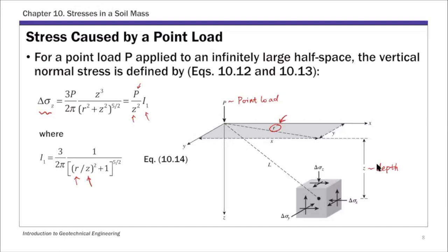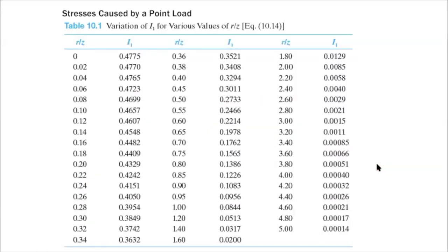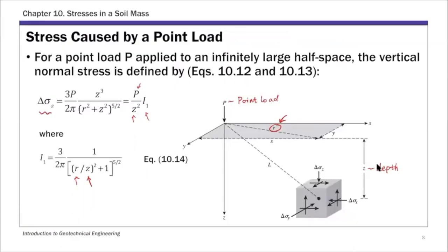Most of the time in this chapter, when we solve stress distribution problems, we're going to use a tabular form of the solution. I1 is a function of position R and Z. In the table, you'll see R over Z values and the corresponding I1 values. If your R over Z value falls in between listed values, you can use simple interpolation. Once you get I1, you can calculate Delta Sigma Z with the expression. That's Boussinesq's point load solution — it's very simple to use.